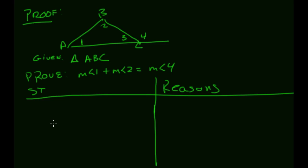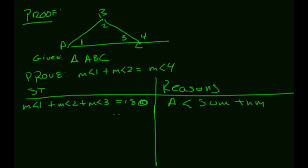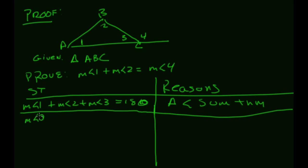Building the two-column proof: First, by the Triangle Angle Sum Theorem, the measure of angle one plus the measure of angle two plus the measure of angle three equals 180. Second, angles three and four form a straight line, so by the Angle Addition Postulate, the measure of angle three plus the measure of angle four also equals 180.